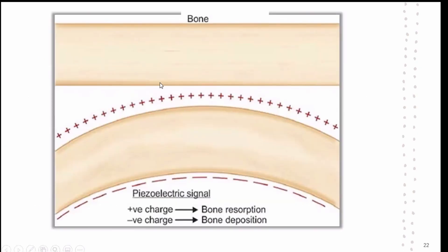From this figure, we can see that when force is applied on the tooth, the adjacent alveolar bone bends. This deformation causes the bone to become electrically charged — exhibiting piezoelectricity — which will be either positive or negative charge. A negative charge denotes bone deposition, while a positive charge indicates bone resorption.